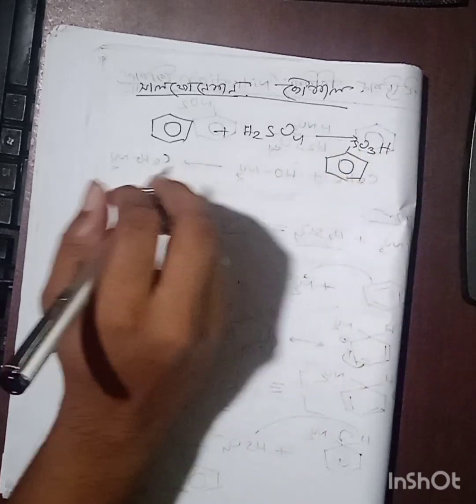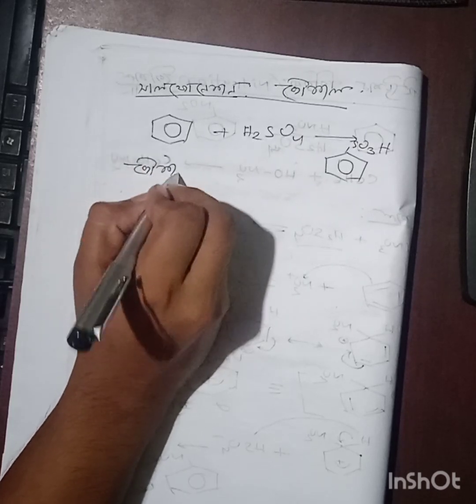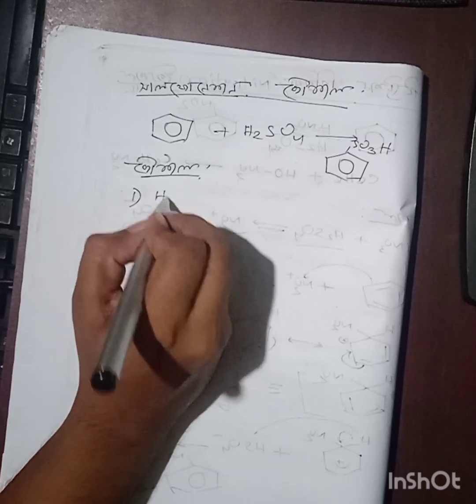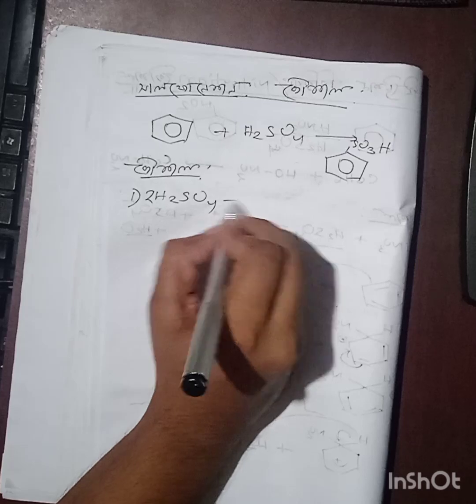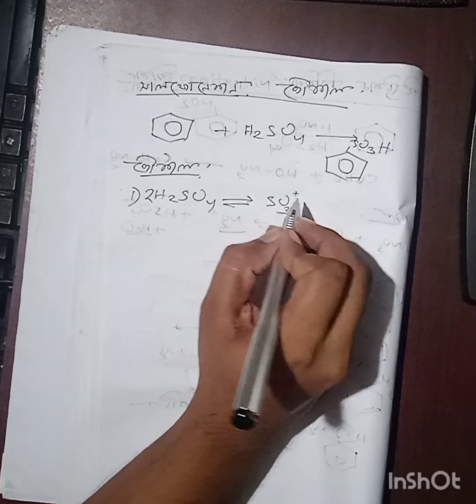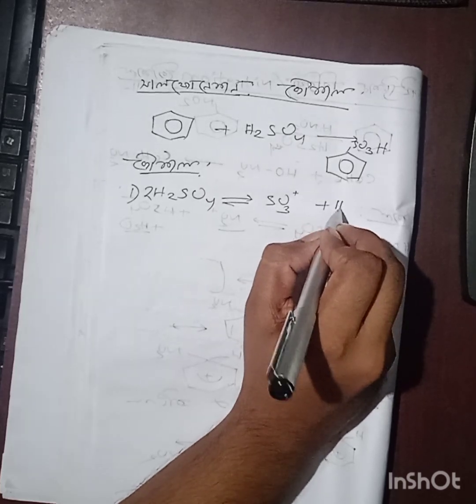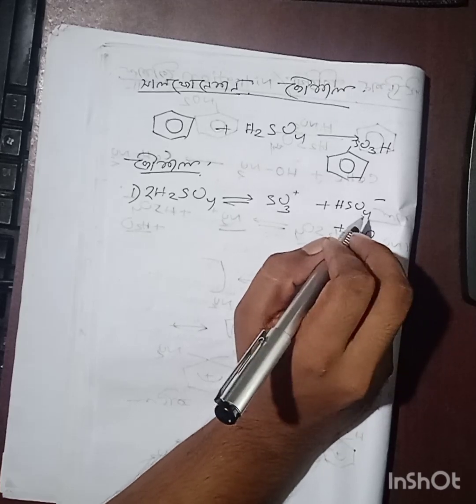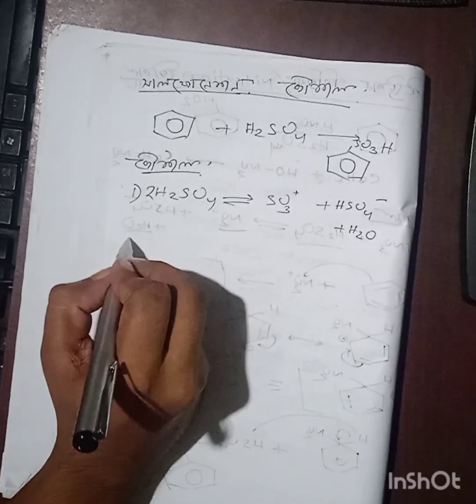This electrophile, SO3H, follows a mechanism. Sulfuric acid, two molecules, forms SO3 which is the electrophile, plus bisulfate ion and water. Then the second step will proceed.